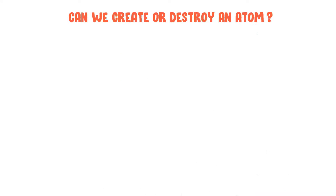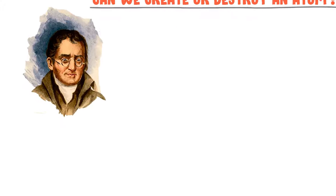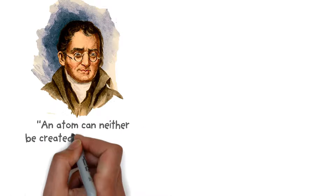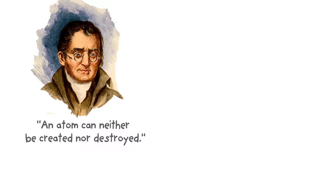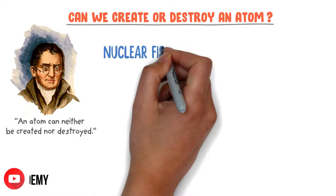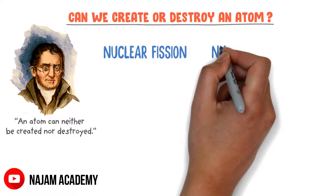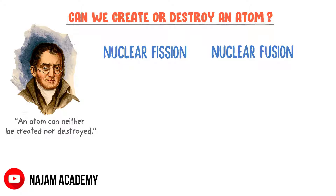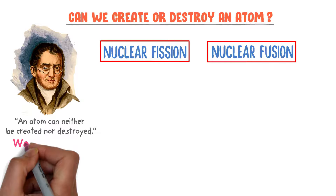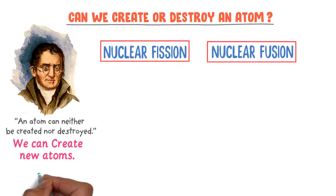Can we create or destroy an atom? Well, according to Dalton's atomic theory, an atom can neither be created nor destroyed. But later, we discover two chemical reactions like nuclear fission reaction and nuclear fusion reaction. In these two chemical reactions, we can create new atoms.